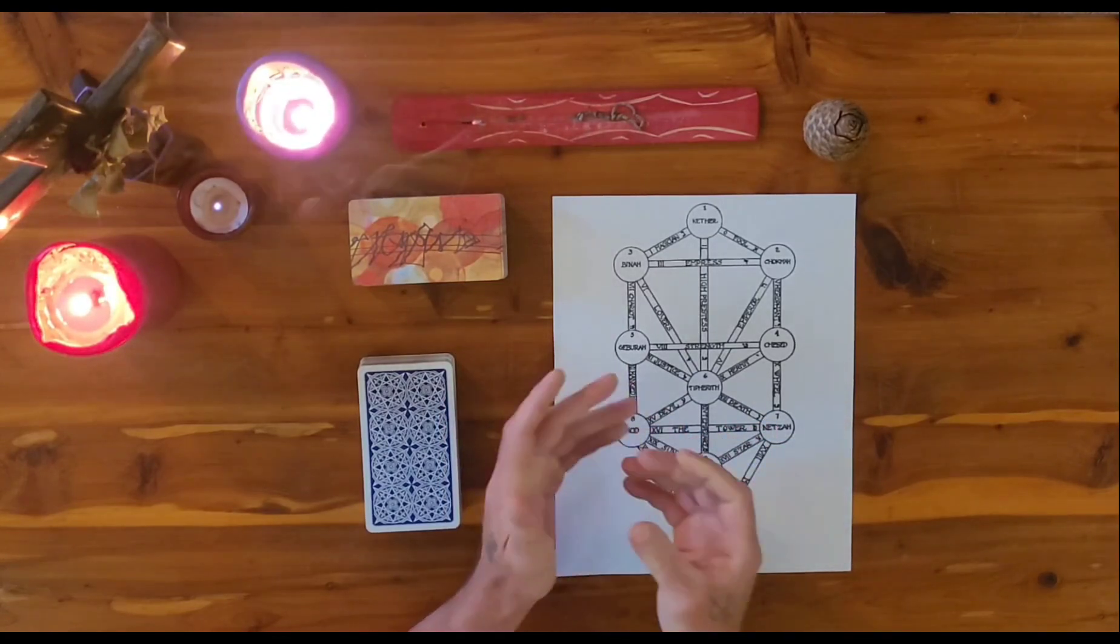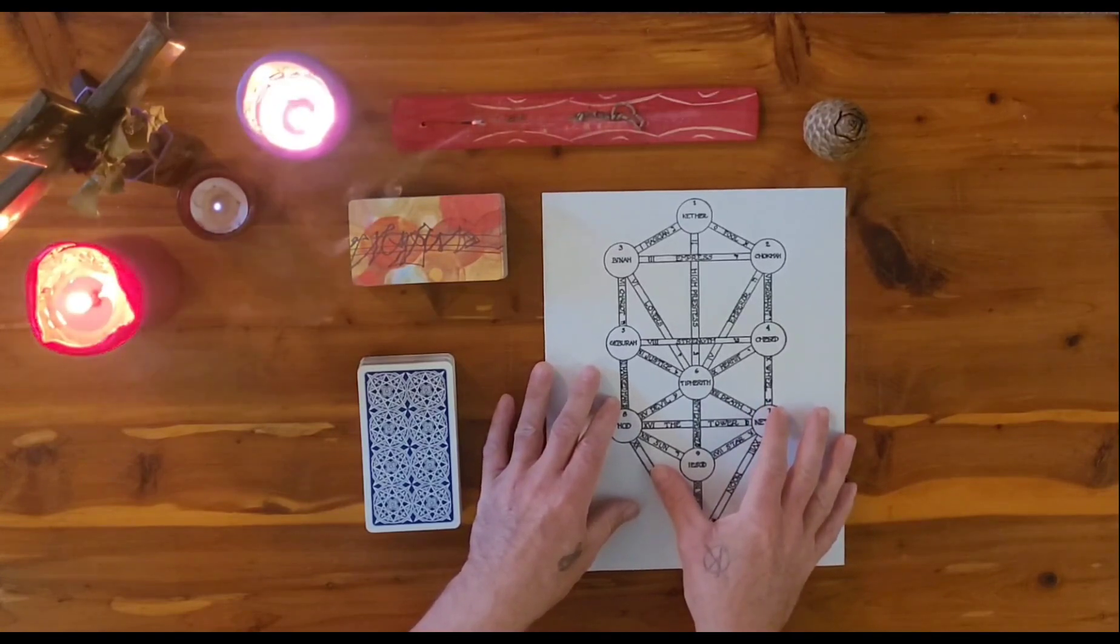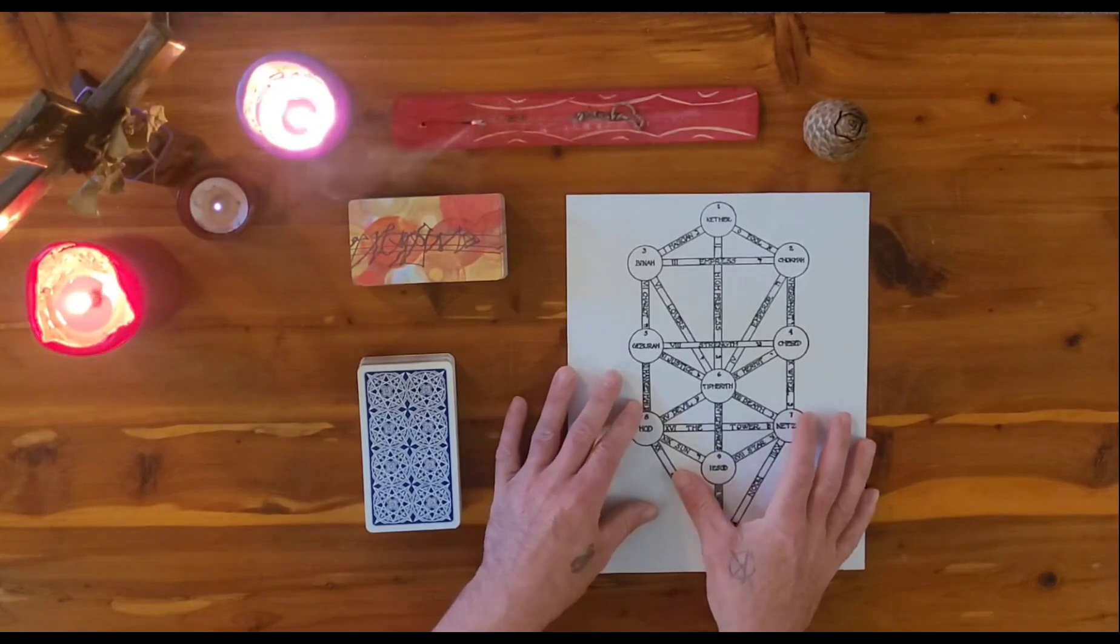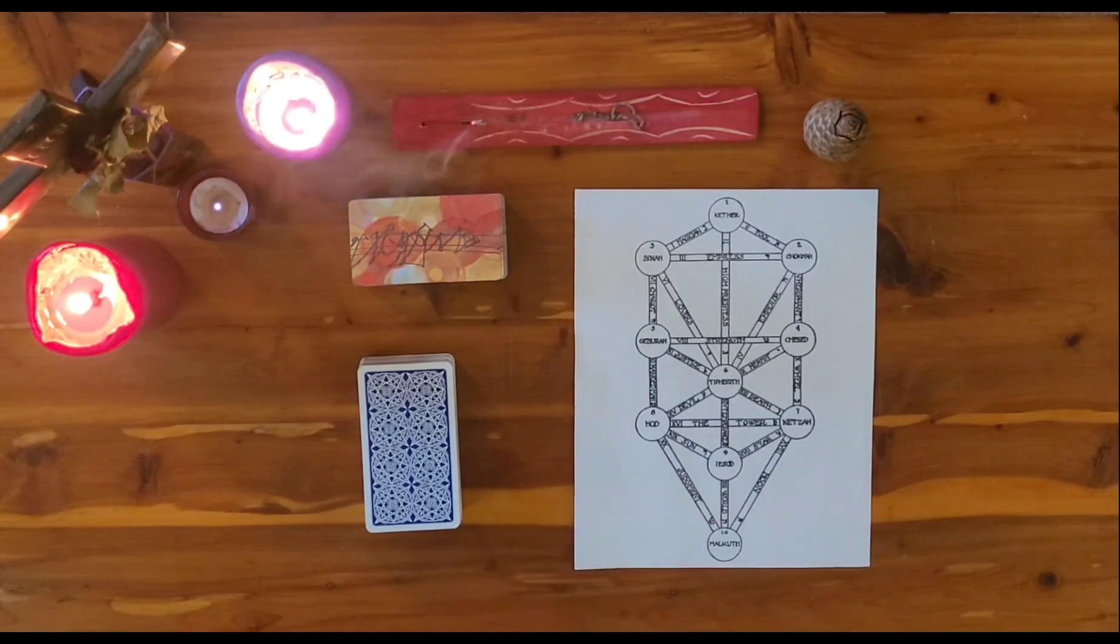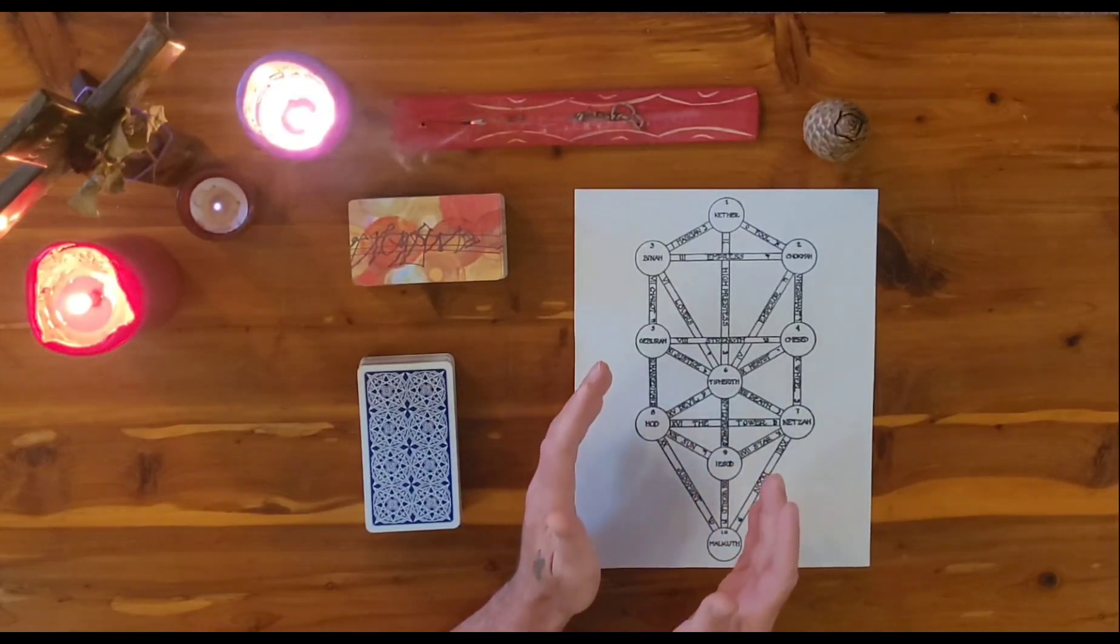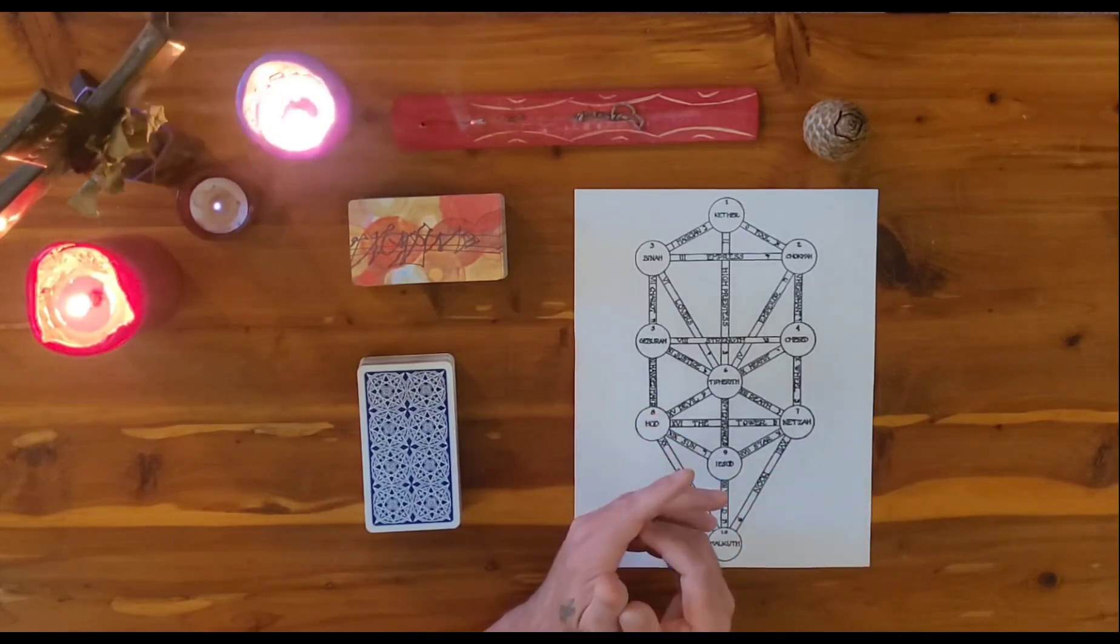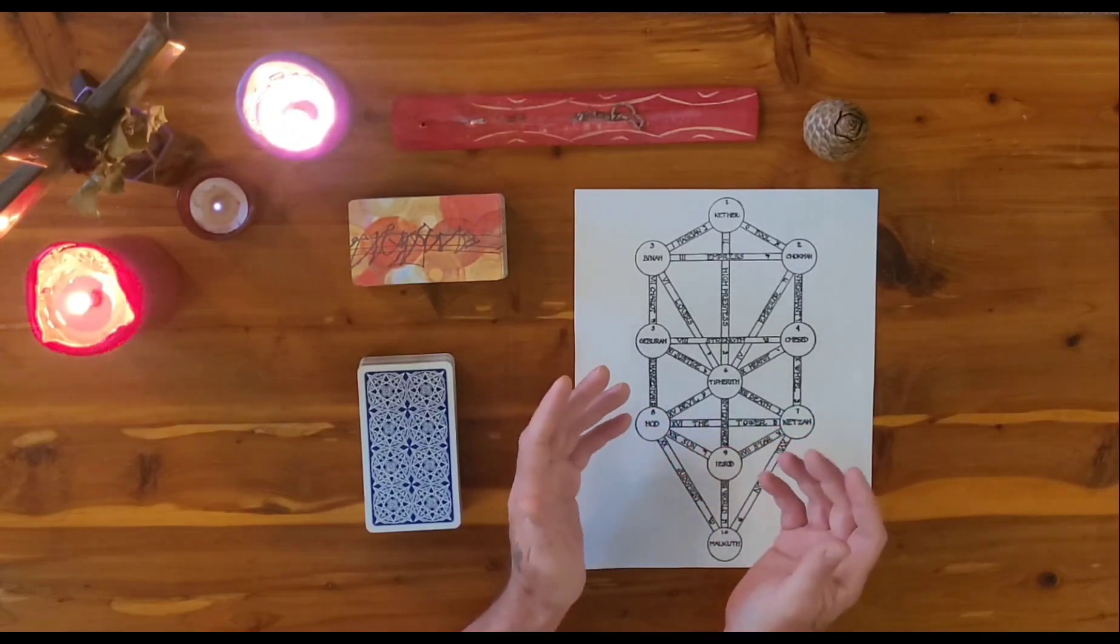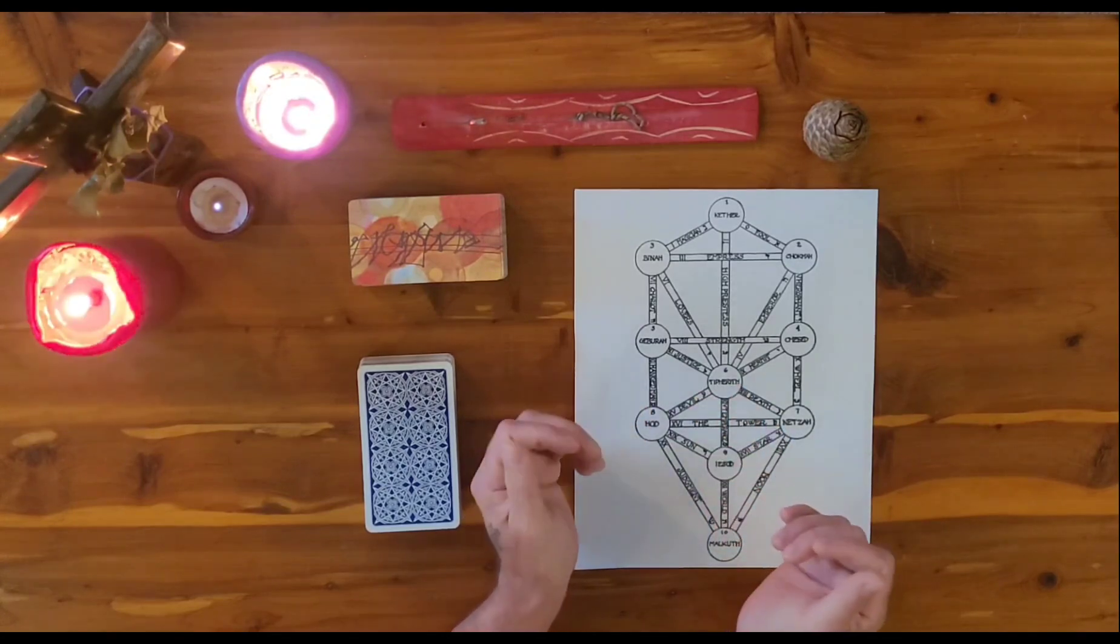So because everything's ruled by vibration, everything is subject to change. And we tend to be creatures of habit because our small self craves stability, because stability brings security. And the small self isn't always a bad thing. We do need that stability. But in relation to the tree of life, because of the law of vibration and everything changing, we're going to find ourselves in different circumstances quite frequently. And that's the idea of climbing and descending this ladder.